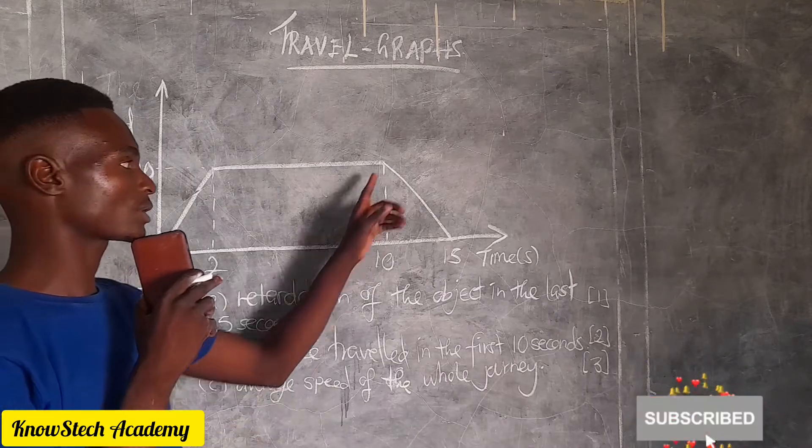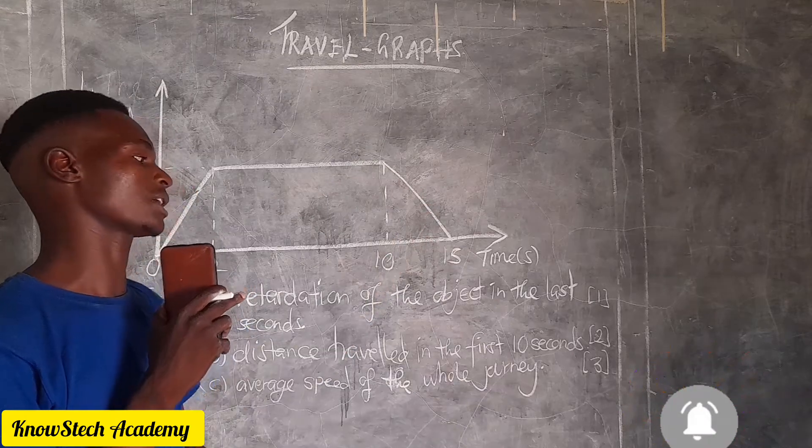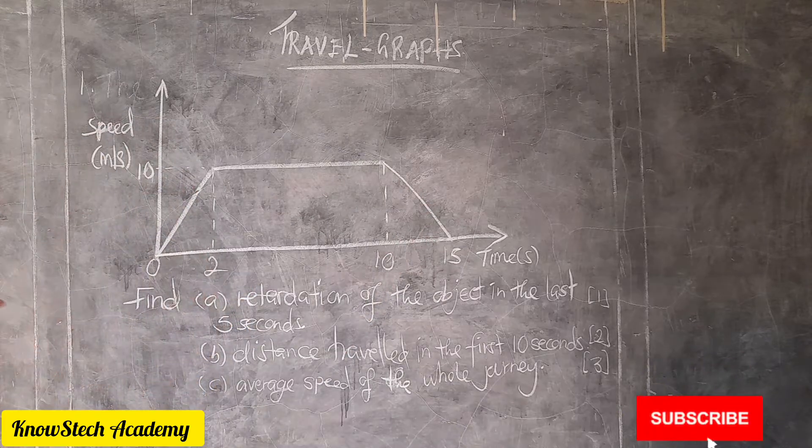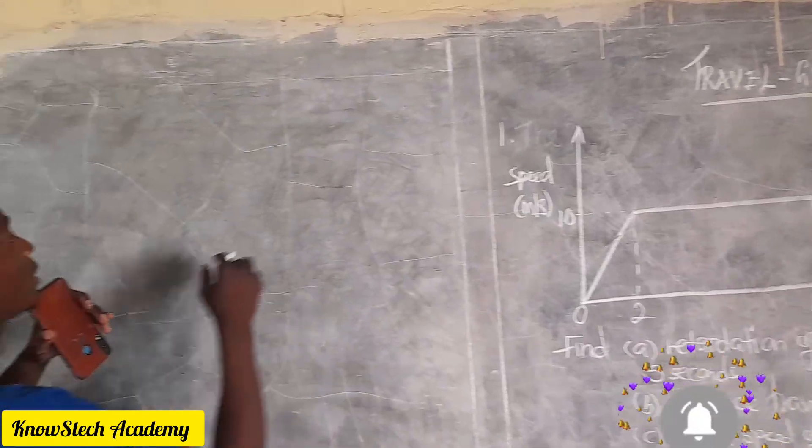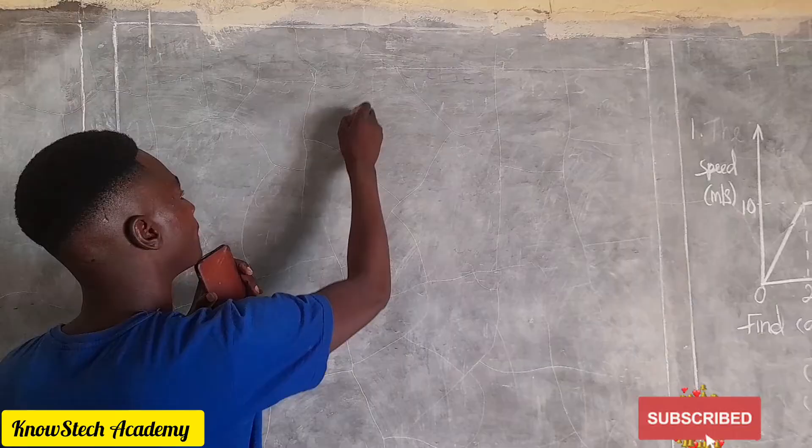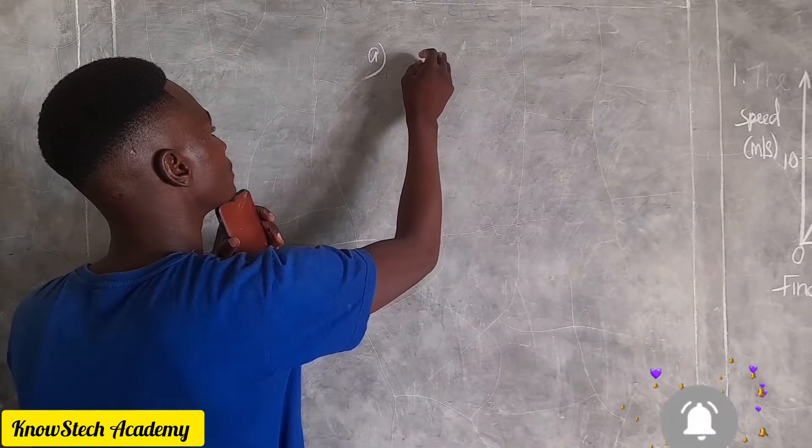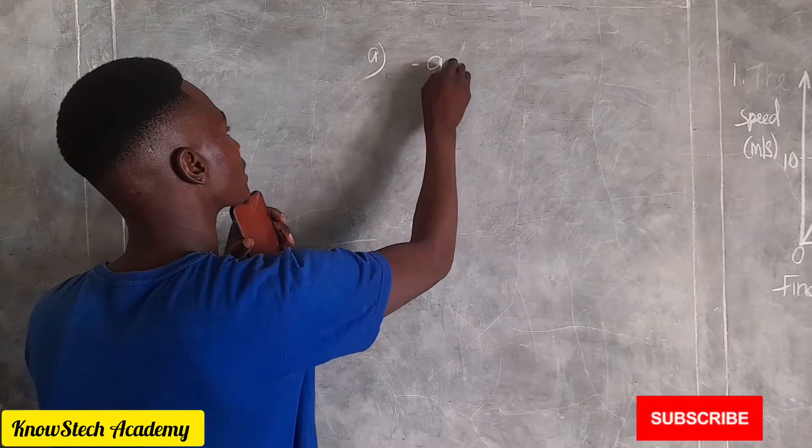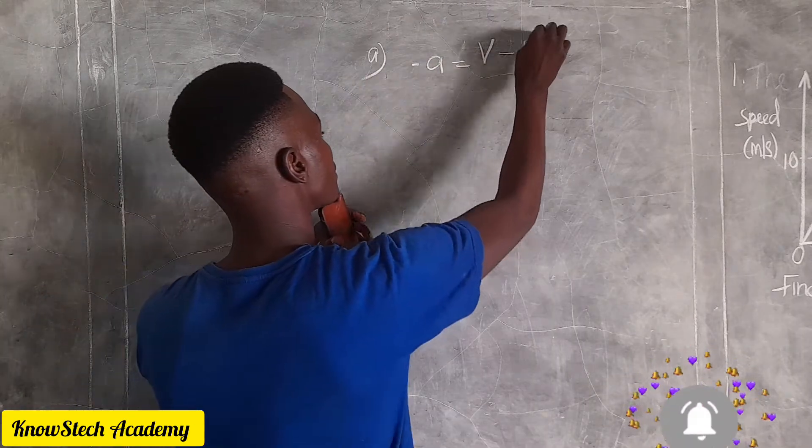So to find the retardation we are going to use this formula. Negative acceleration is equal to final velocity minus initial velocity over time taken.